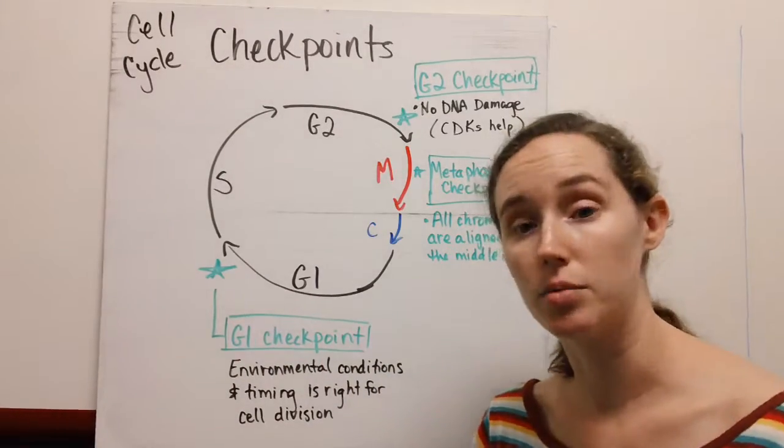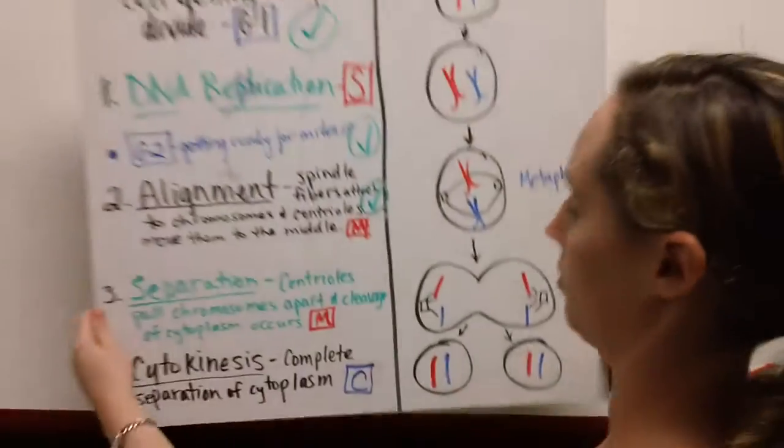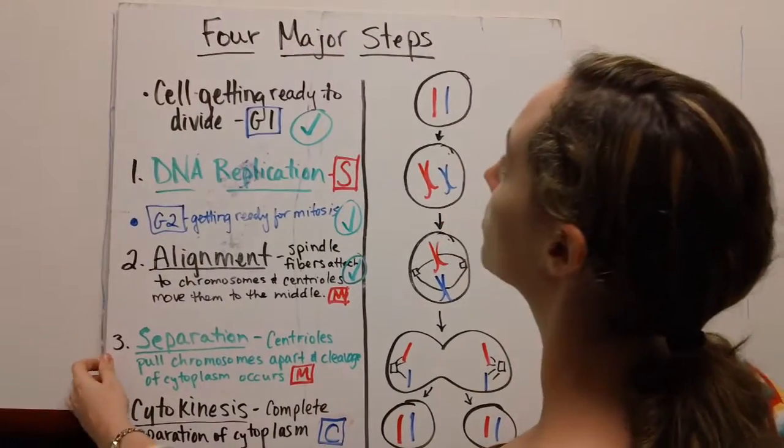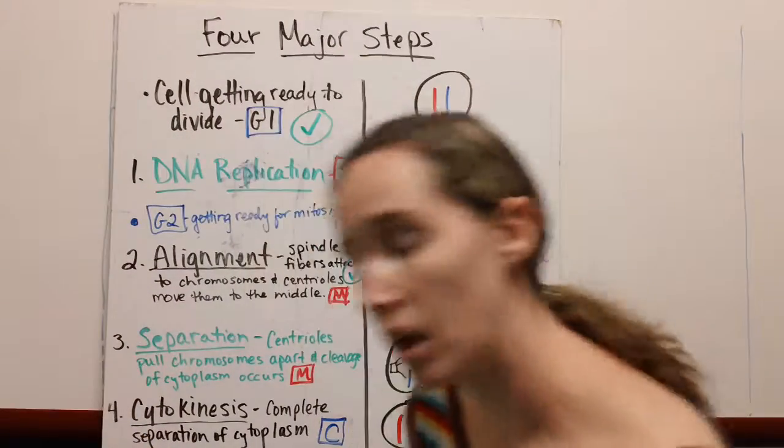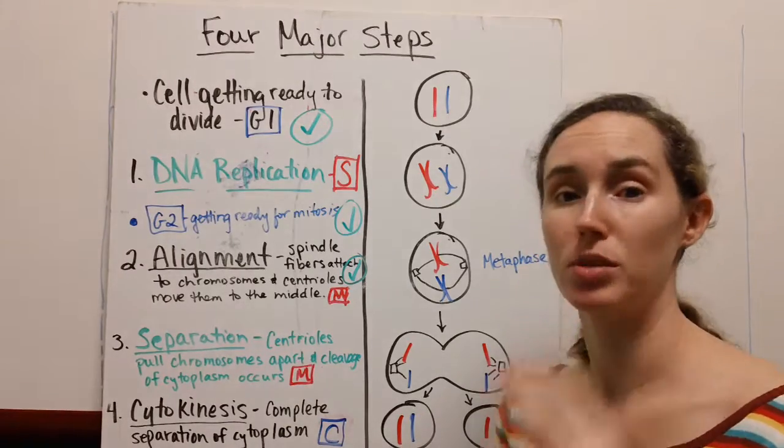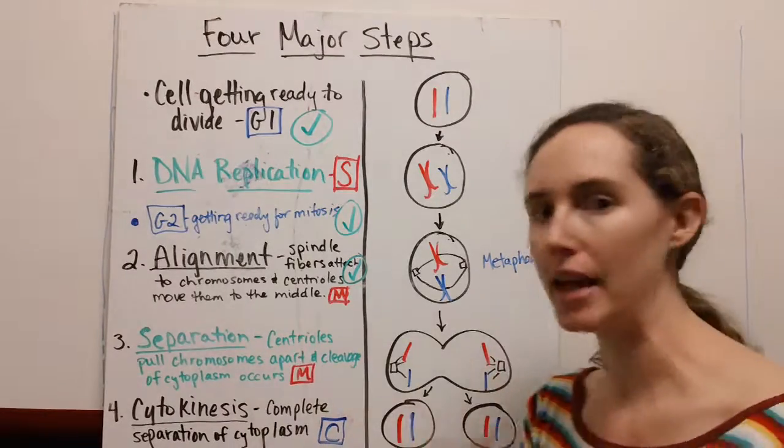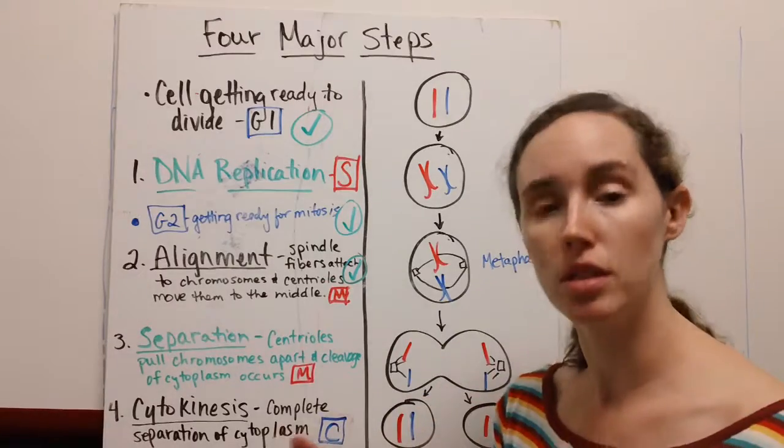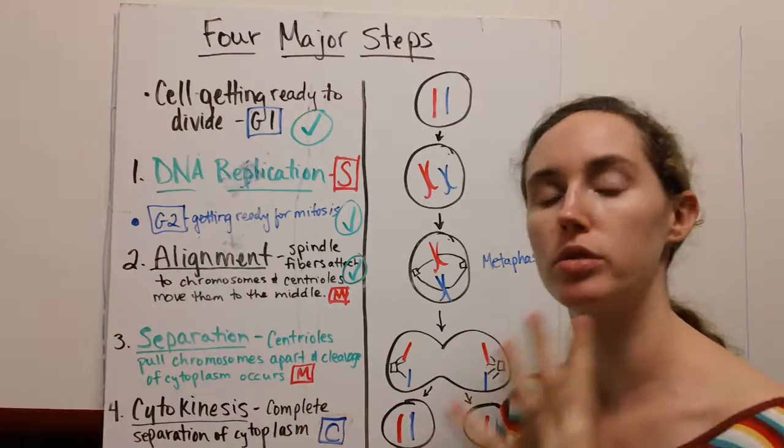So let's look at some diagrams. There are four major steps. We just saw a lot of phases and arrows, but all of this can be simplified into four simple steps.